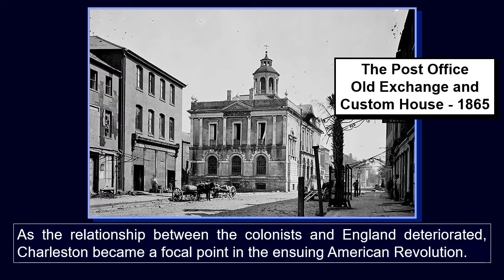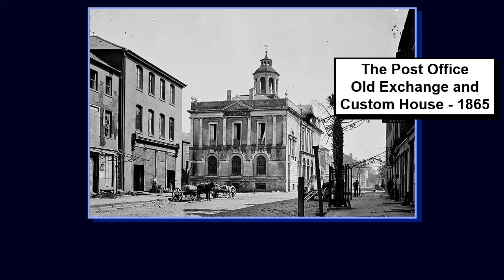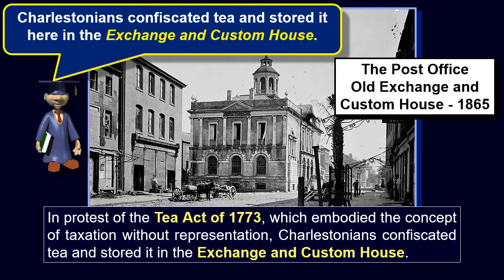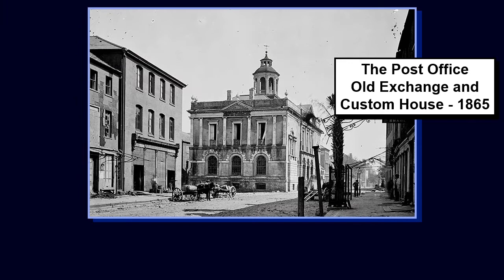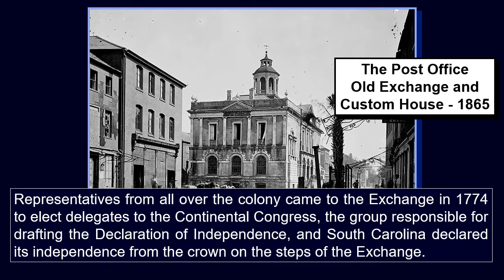As the relationship between the colonists and England deteriorated, Charleston became a focal point in the ensuing American Revolution. In protest of the Tea Act of 1773, which embodied the concept of taxation without representation, Charlestonians confiscated tea and stored it in the Exchange and Custom House. Representatives from all over the colony came to the Exchange in 1774 to elect delegates to the Continental Congress, the group responsible for drafting the Declaration of Independence, and South Carolina declared its independence from the Crown on the steps of the Exchange.